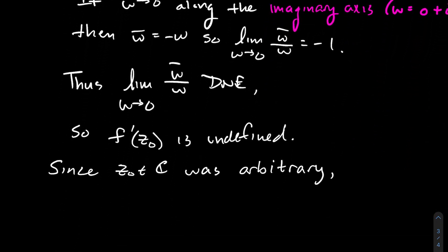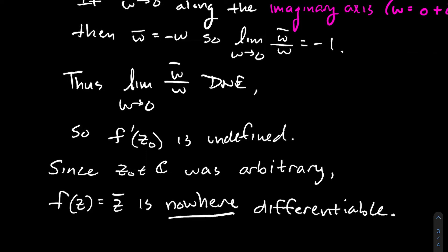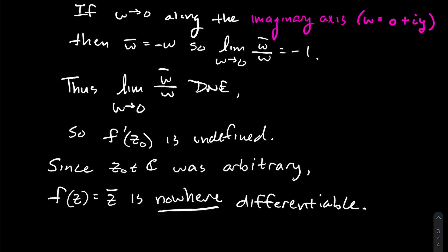Since that limit doesn't exist, f′(z₀) is undefined — the derivative does not exist at z₀. But z₀ was arbitrary; it was any complex number. So what we just showed is that the function taking the complex conjugate is nowhere differentiable: there are no complex numbers for which its derivative exists.